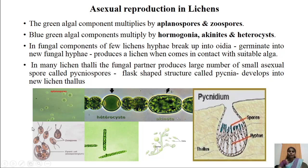In case of green alga, aplanospores are thin-walled, non-motile spores produced inside a sporangium. On separation and liberation from the sporangium, these aplanospores, when they come in contact with suitable fungal hyphae, develop into new lichen thalli.